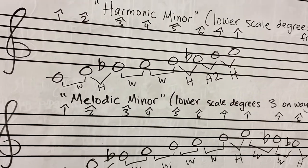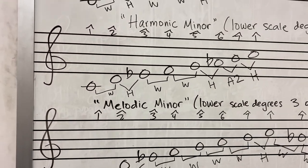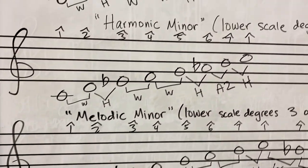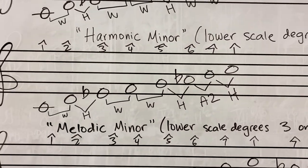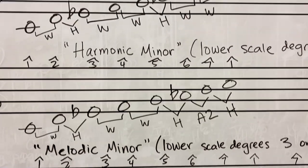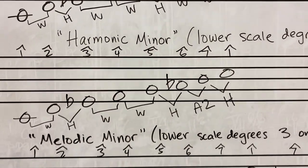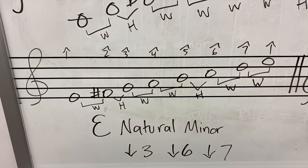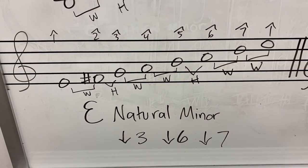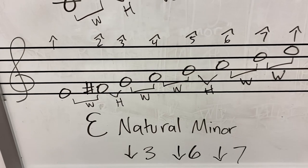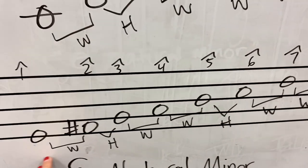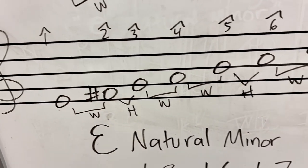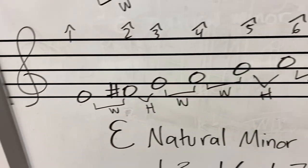So all three minor scales have something in common — every minor scale has the third lowered. The sixth and seventh degrees are altered depending on the different minor scale, and whether it's ascending or descending. Let me apply this to another scale — E. We're going to do E natural minor. You can see the same types of whole steps and half steps; we're lowering the third, the sixth, and the seventh degrees.